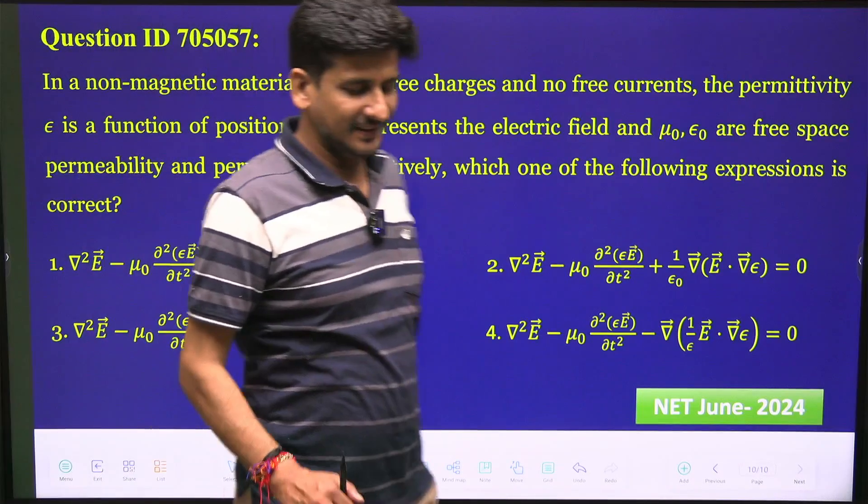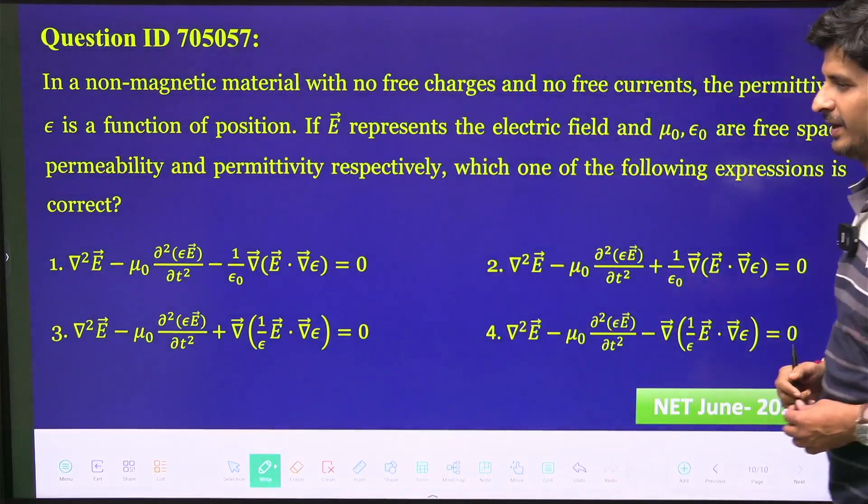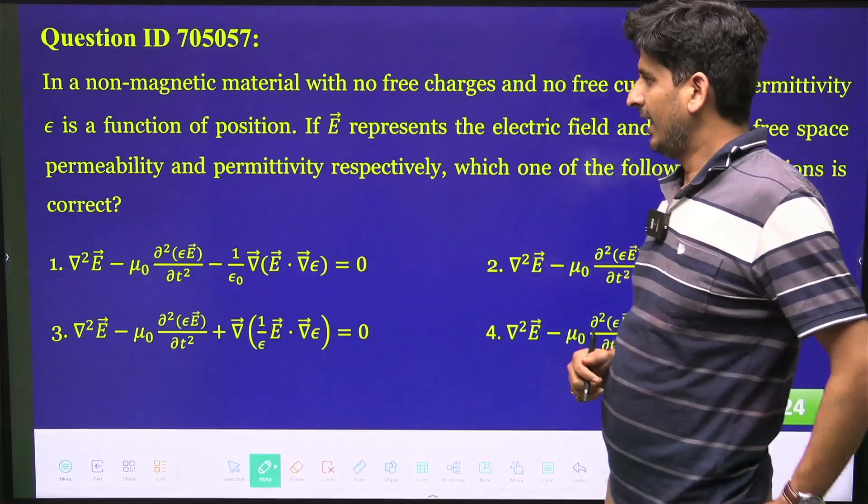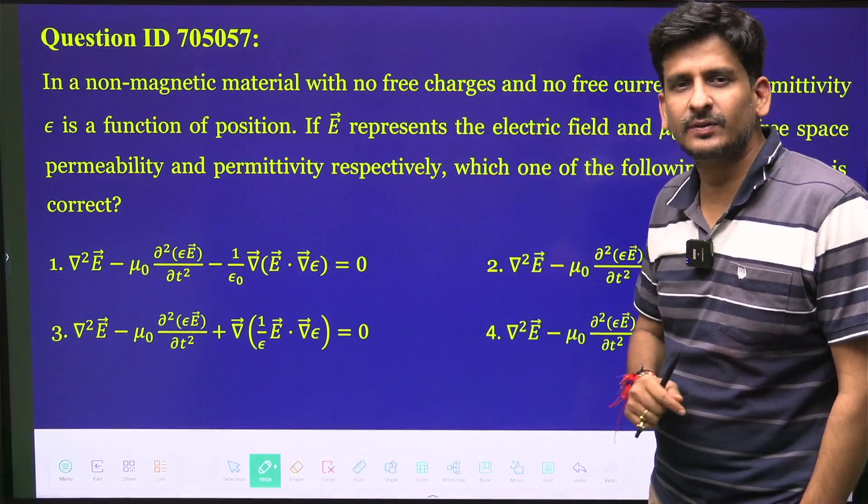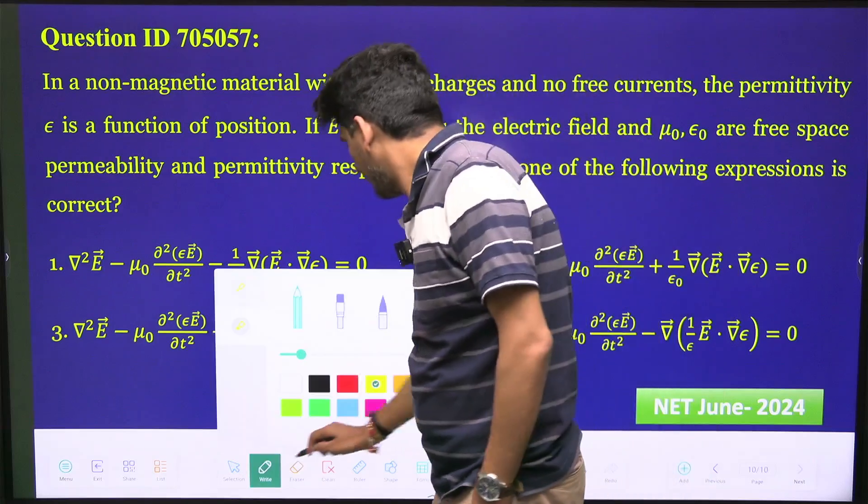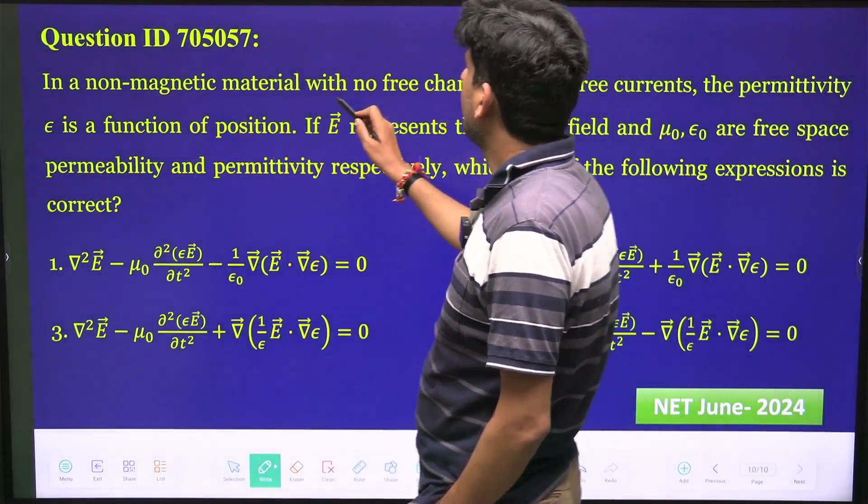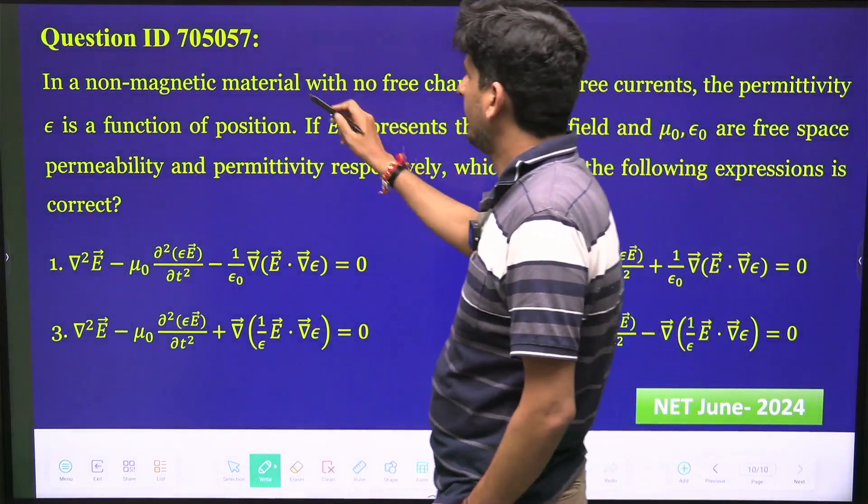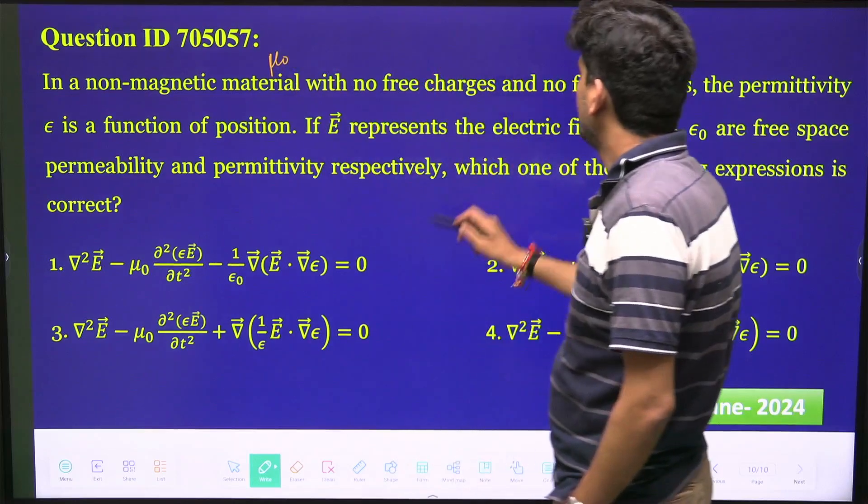Hello students, this question is from electromagnetic theory and in particular Maxwell's equations. In this question, they have given a non-magnetic material, which means we will take μ₀ with no free charges.